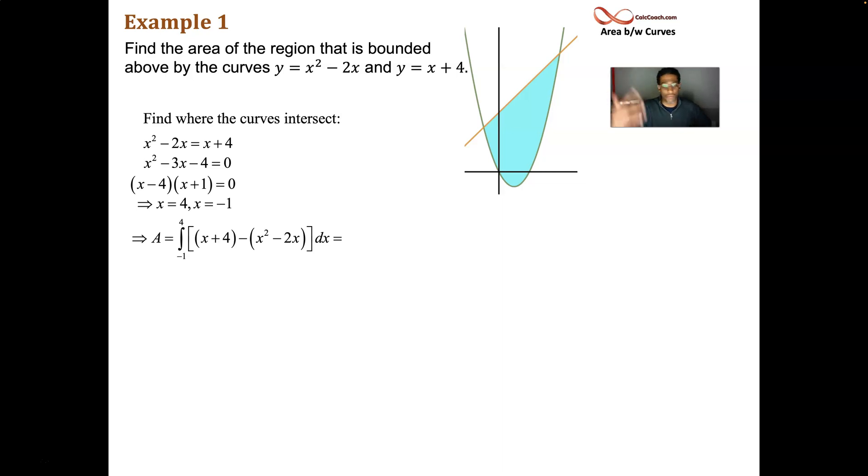And we'll just be integrating upper function minus lower function. Line minus parabola. Be careful. Use parentheses so you can distribute negative properly. And it's best if you can write it in decreasing order. You don't have to. But there we go. Negative x squared. We have our x and then plus the 2x, so 3x, and then plus the 4.